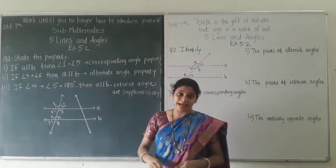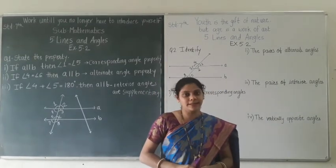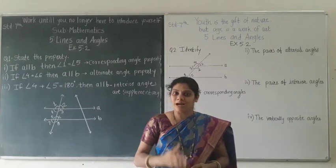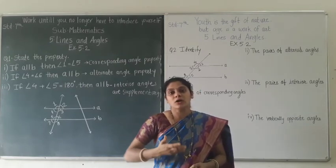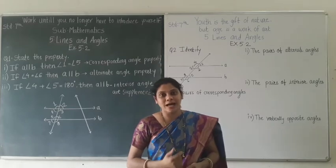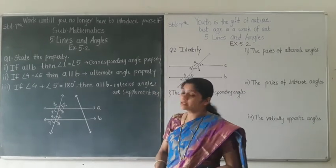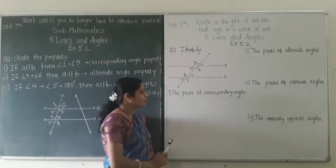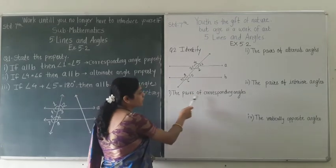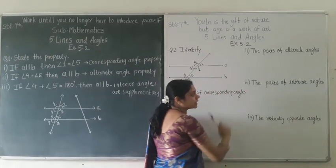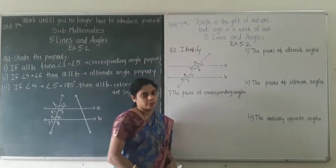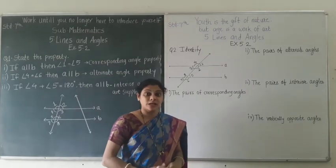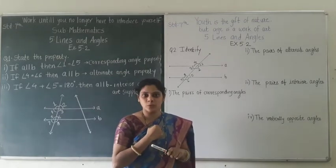By using the characteristics and features of corresponding angles, alternate angles, and interior angles, and with the help of the diagram, we can easily state which property to use to prove the equivalency or the sum of the given angle measurements. Now we will move forward to question number 2: Identify — using the given diagram — the pairs of corresponding angles, alternate angles, interior angles, and vertically opposite angles.